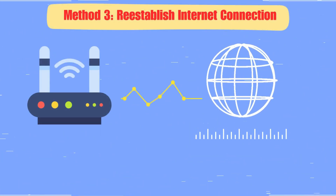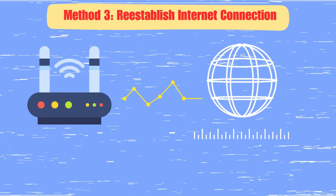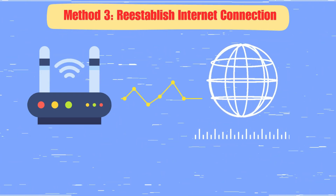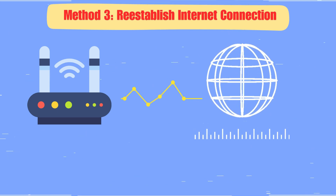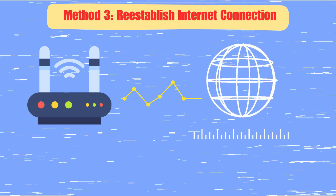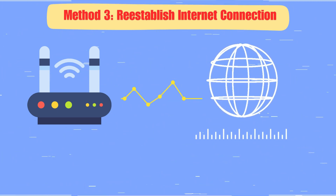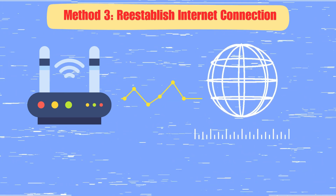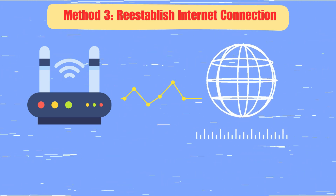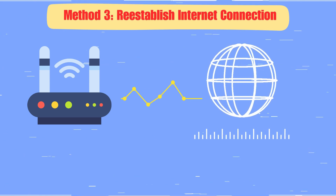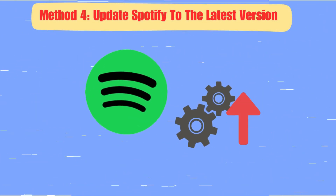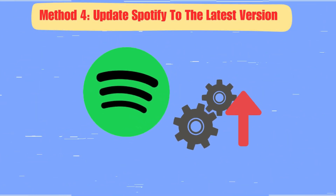Method 3: Re-establish Internet Connection. Greyed out songs may appear if there is no network connection or a weak network connection, so re-establishing the connection may resolve this issue.